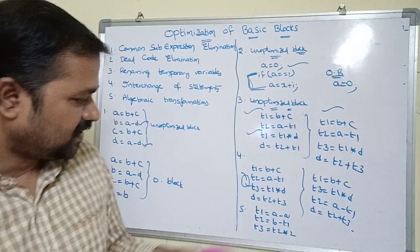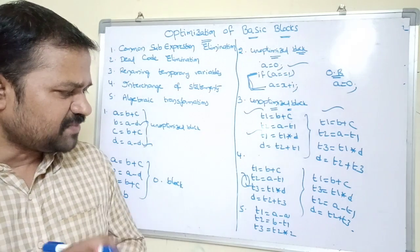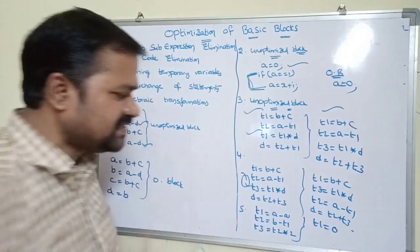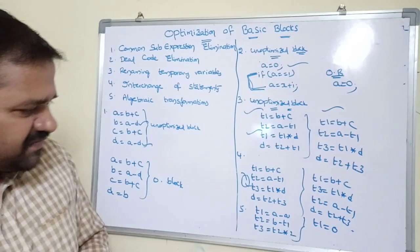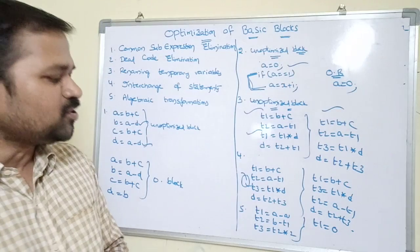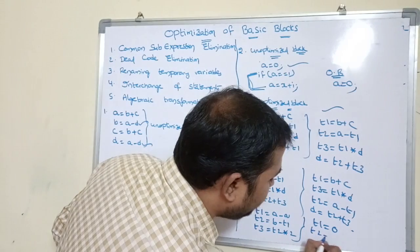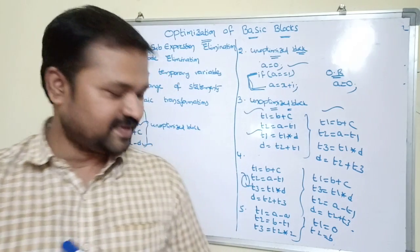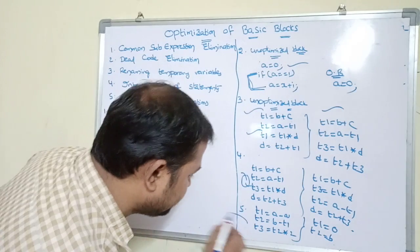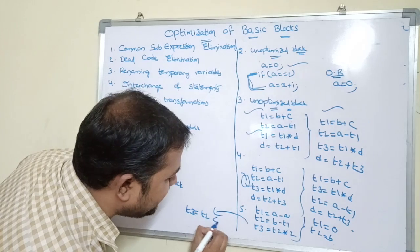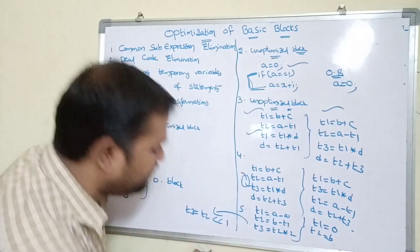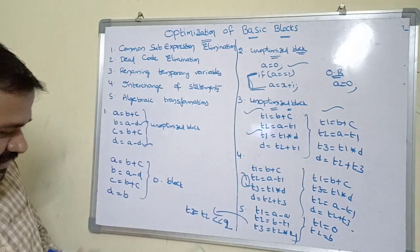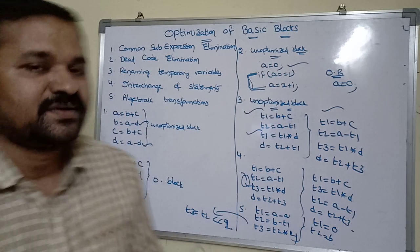The fifth approach is algebraic transformations. For example, t1 = a - a: since a - a is always 0, we directly write t1 = 0. Then t2 = b - t1: since t1 = 0, we write t2 = b. For t3 = t2 * 4: since multiplication is expensive, we replace it with a left shift — t3 = t2 << 2, because shifting left by 2 bits multiplies by 4. These are the five approaches to optimize a basic block.